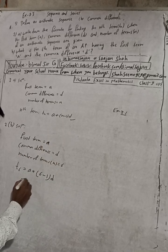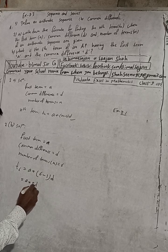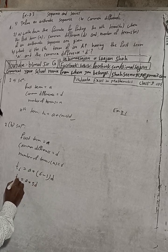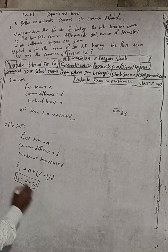So a plus 6 minus 1 is 5 and this is d. So t6 is equal to a plus 5d. This is our answer.